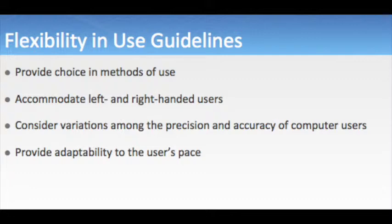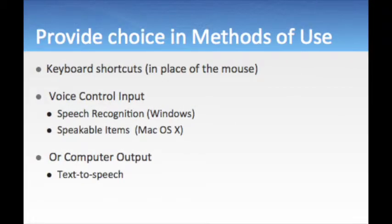Now let's explore these items a bit deeper, starting with item 1: Provide choice in methods of use. Providing choice in methods of use includes keyboard shortcuts in the place of a mouse, voice control input such as speech recognition in Windows, and speakable items on Mac OS X, or computer output such as text-to-speech.